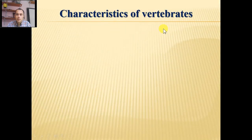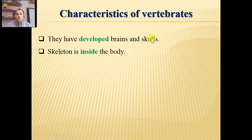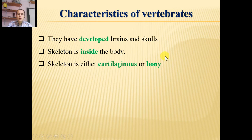Now about the characteristics of vertebrates. They have got a developed, complex brain which is protected by a bone we call the skull. Their skeleton is inside the body, that's why you can't see any bone — for example, in humans. The skeleton may be either cartilage or bony. Cartilage means soft bone, and it is found in your ear, tip of the nose, and trachea.